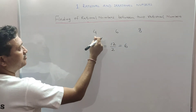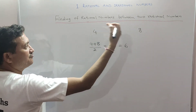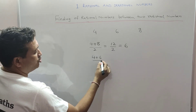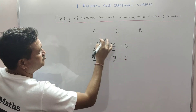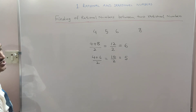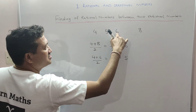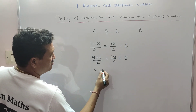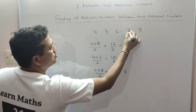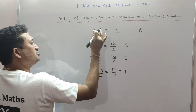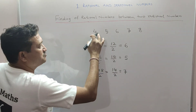Now we can find a rational number between 4 and 6: add 4 and 6 and divide by 2 — 4 plus 6 is 10 upon 2, which is 5. So 5 lies between 4 and 6. Similarly, for a rational number between 6 and 8: 6 plus 8 upon 2 is 14 upon 2, which is 7. So 5, 6, and 7 are three rational numbers lying between 4 and 8. You can continue this procedure to find more rational numbers between 4 and 8.